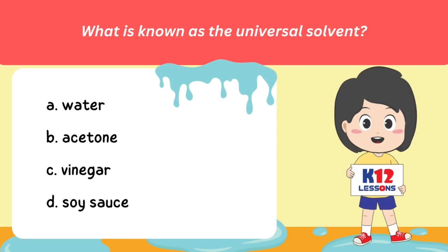What is known as the universal solvent? A. Water. B. Acetone. C. Vinegar. D. Soy sauce.